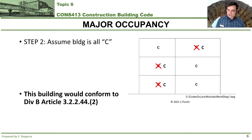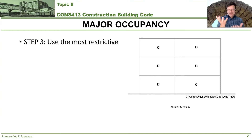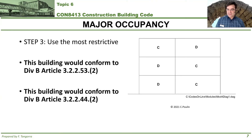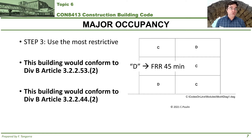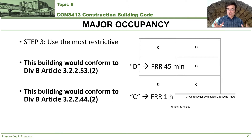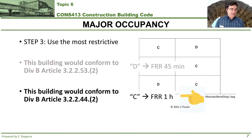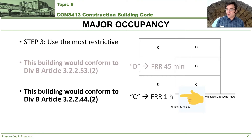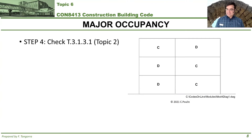Now you have two options — two articles based on either C or D occupancy — and you have to find the most restrictive of the two. If it is D occupancy, Article 3.2.2.53.2 gives a fire resistance rating of 45 minutes. If we use Article 3.2.2.44.2, assuming it's all C occupancy, we get a fire resistance rating of one hour. You would pick the latter — assuming all C occupancy — because one hour is greater than 45 minutes.